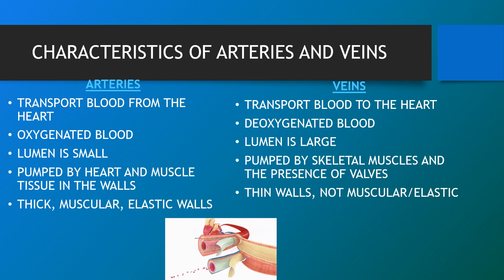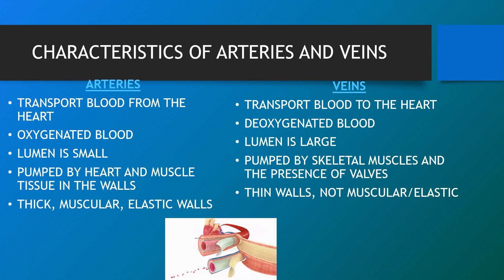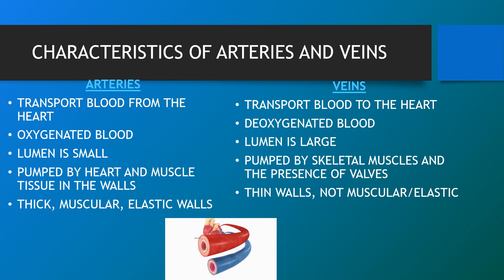Arteries transport blood from the heart, carry oxygenated blood with a high concentration of nutrients, have a small lumen, and have thick, muscular and elastic walls. Veins carry blood back to the heart, carry deoxygenated blood with a high concentration of waste products, have a large lumen, are pumped by the skeletal muscles, contain valves, and have thin, non-muscular, non-elastic walls. Unlike arteries, veins contain valves that ensure blood flows in only one direction. Arteries don't require valves because pressure from the heart ensures blood flows only one way.